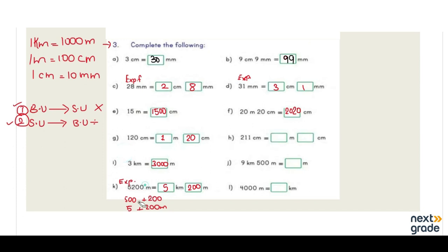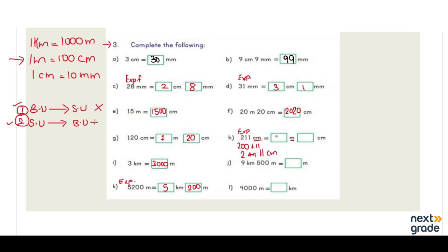Let's erase some extra material and solve the questions. It says 211 centimeters and we have to convert it to the bigger unit, that is meters. We expand it as 200 plus 11. For 200 centimeters, we know 100 centimeters equals one meter, so we divide: 200 divided by 100 equals 2. The answer is 2 meters and 11 centimeters.